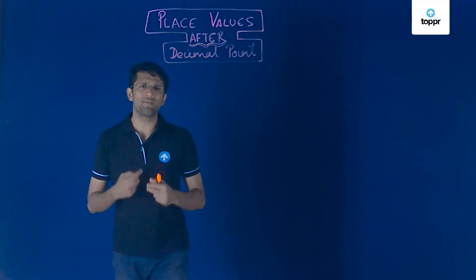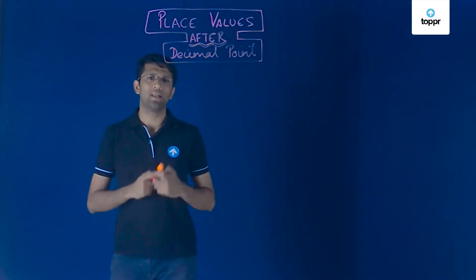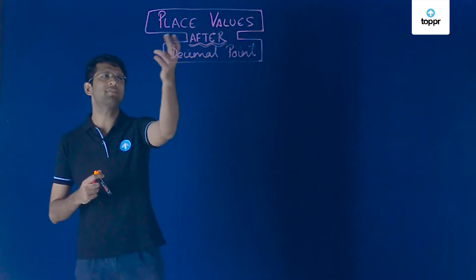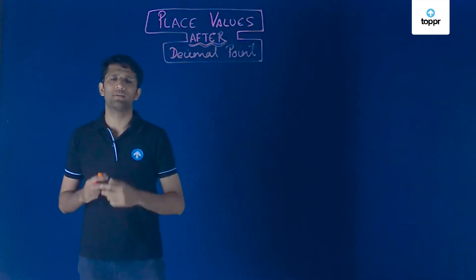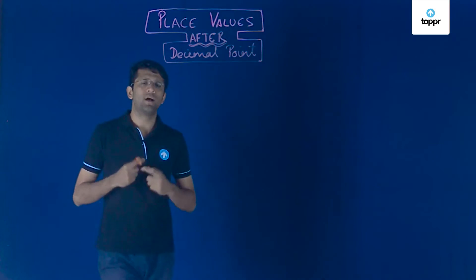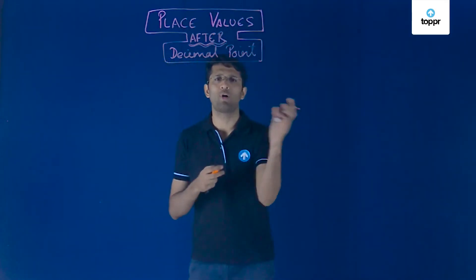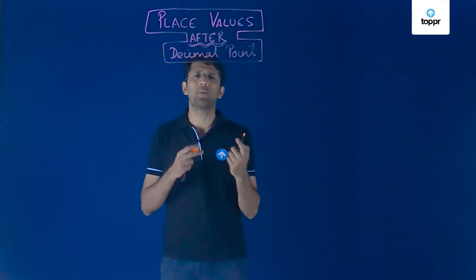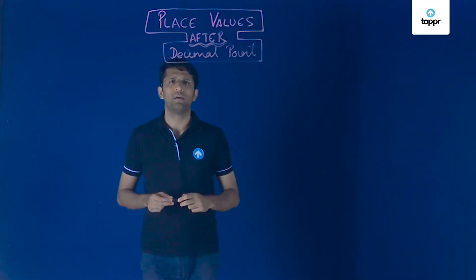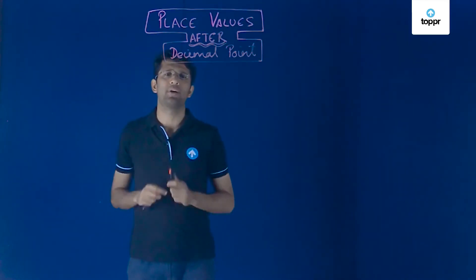In this class we will continue our study of decimal numbers and the next topic that we will see is place values after the decimal point. We have seen what a decimal number is. A decimal number is any number that has a decimal point followed by at least one digit to the right of the decimal point, and we will talk about place values after that decimal point.